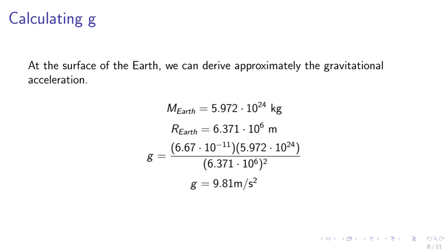At the surface of the Earth, we can derive the gravitational acceleration. m_Earth equals 5.972 times 10 to the 24 kilograms. Radius of the Earth, r_Earth, equals 6.371 times 10 to the 6 meters. g equals 6.67 times 10 to minus 11 times 5.972 times 10 to the 24 divided by 6.371 times 10 to the 6 squared, gives us g of 9.81 meters per second squared.